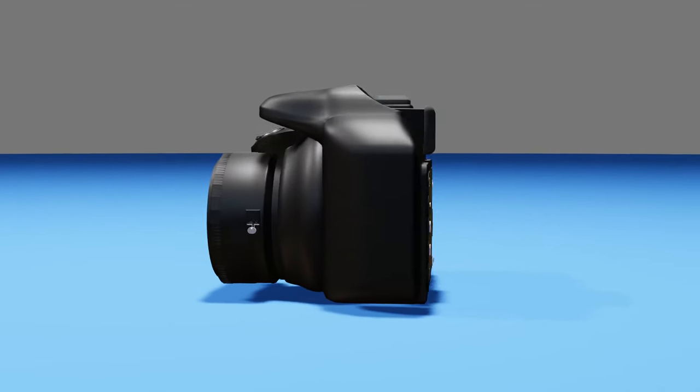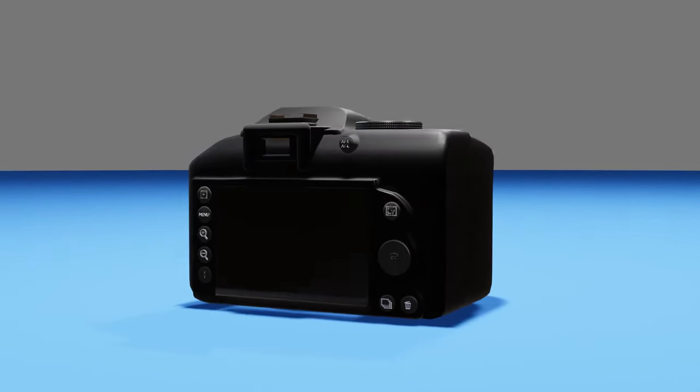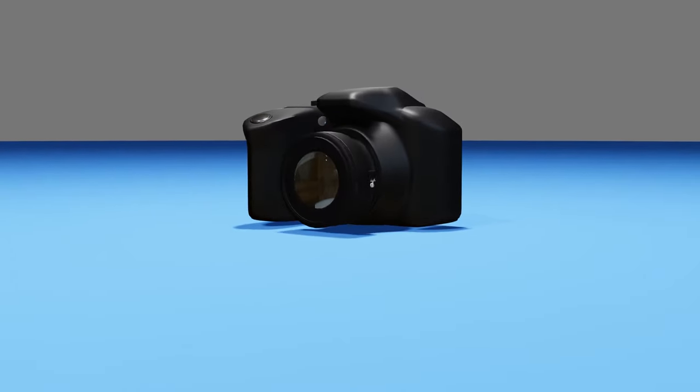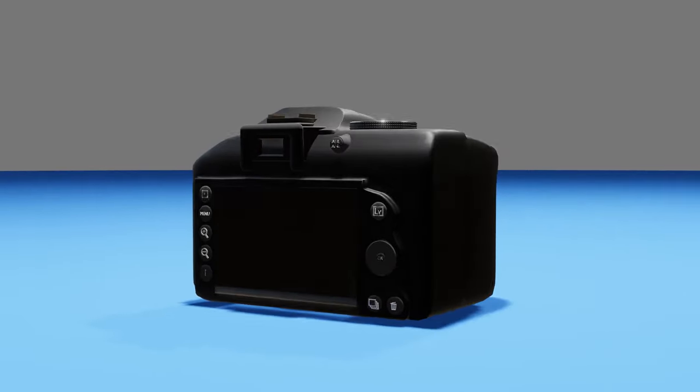It's estimated that 1.4 trillion photos have been taken in 2020. From tiny cameras on the back of smartphones to DSLRs, cameras are all around us. But how do they work?